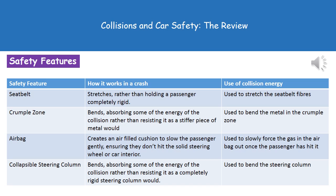The third feature is the airbag. On impact it deploys, creating an air-filled cushion that slows the passenger gently. It also has the added bonus of preventing the person from coming into contact with the steering wheel or the car interior, since those are very solid surfaces. In terms of collision energy, it's used to slowly force the gas in the airbag out as the passenger hits it.